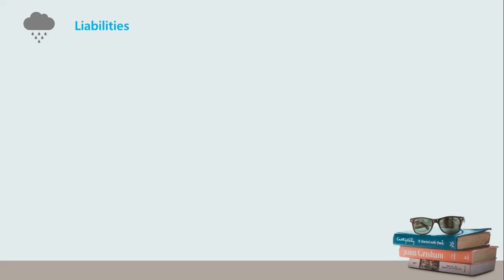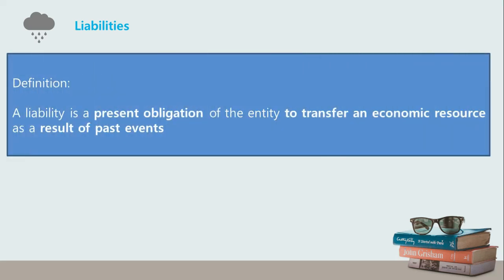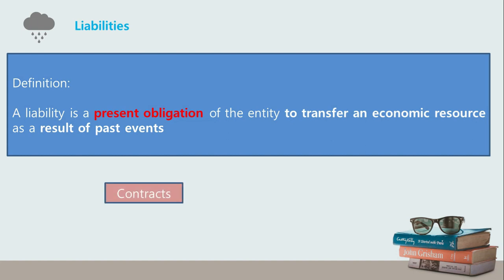The second element is liability. A liability is a present obligation of the entity to transfer an economic resource as a result of past events. From this definition, three key concepts emerge. Number one: a liability must be a present obligation — a duty or responsibility that an entity has no practical ability to avoid, and is always owed to another party. Similar to rights, obligations are established by contract, such as the obligation to make payments owing to purchases, or by legislation, such as the obligation to pay taxes, and other similar means.